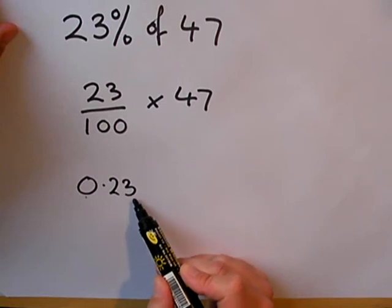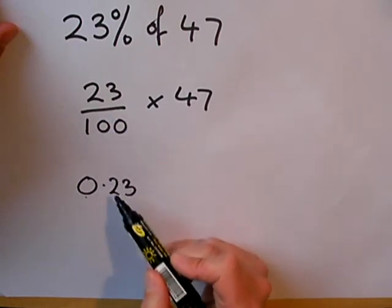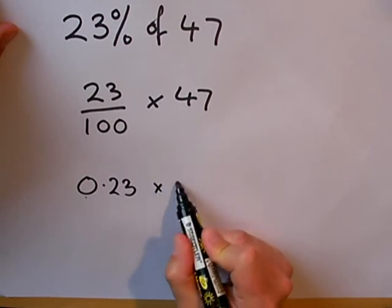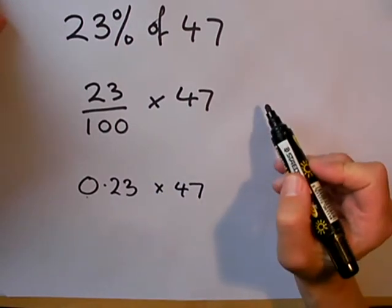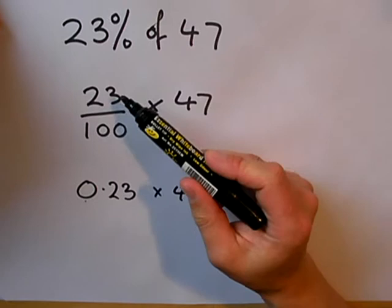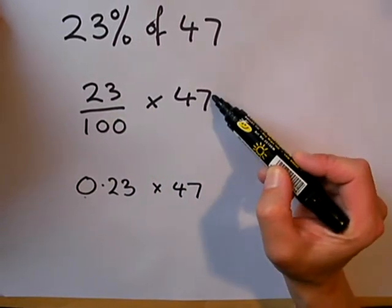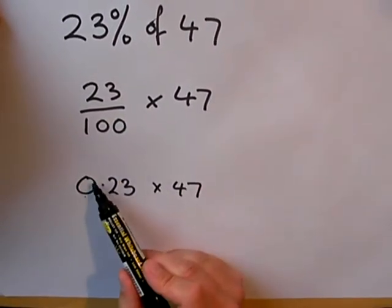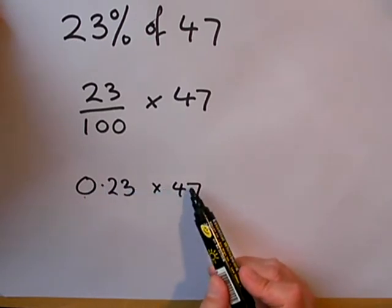Remember, that decimal is exactly the same as this fraction, it's just a different way of writing it. So when we use our calculator, we can do 23 divided by 100 times by 47, or we can write 0.23 multiplied by 47.